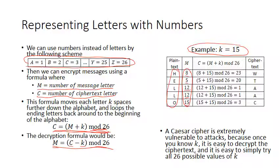You plug those values of M into the formula to get C — add 15 and mod by 26 for each one. You get these resulting numbers, then translate those back into text. So 23, the 23rd letter of the alphabet is W, the 20th letter is T, the first letter is A, and the third letter is C.